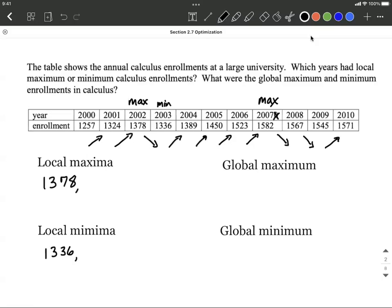Then in 2009, we change from decreasing to increasing, so we call that a minimum. We said maximum in 2007 of 1582, the y value, the enrollment. And then in 2009, we would say 1545 is going to be a minimum because we change from decreasing to increasing.